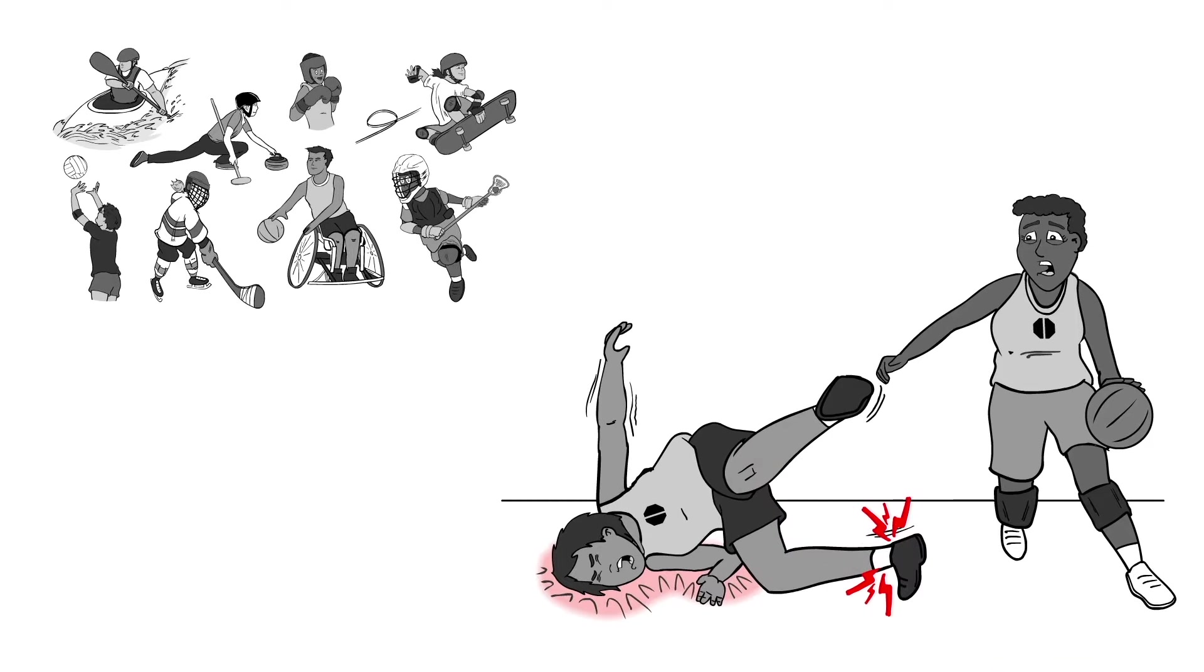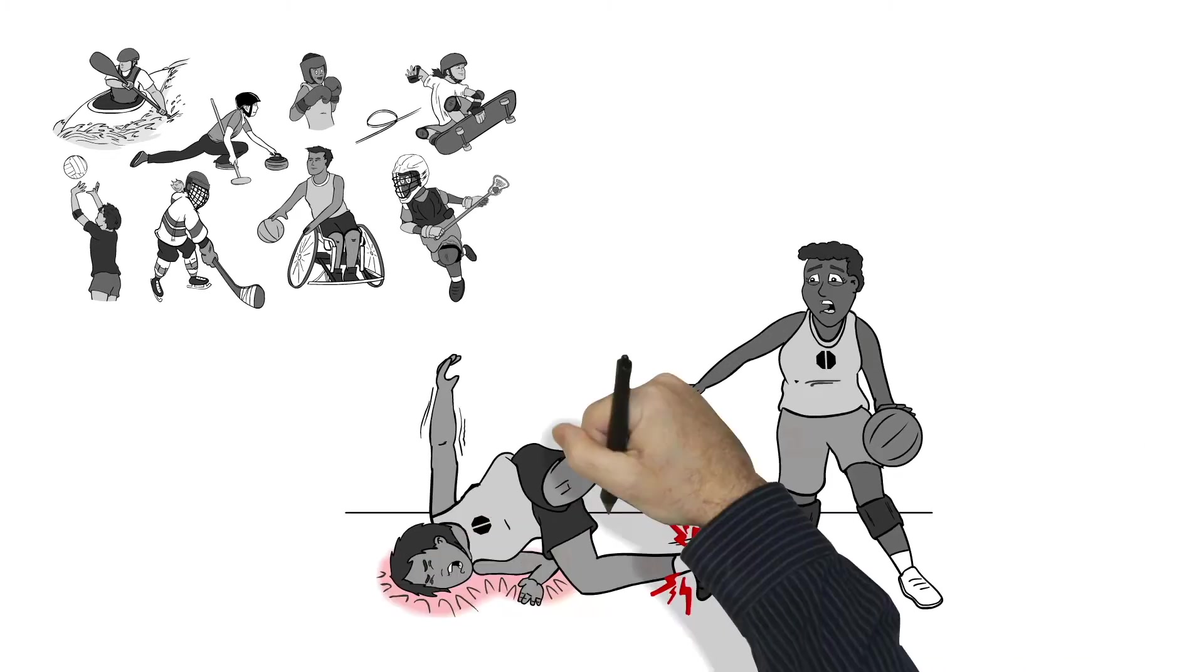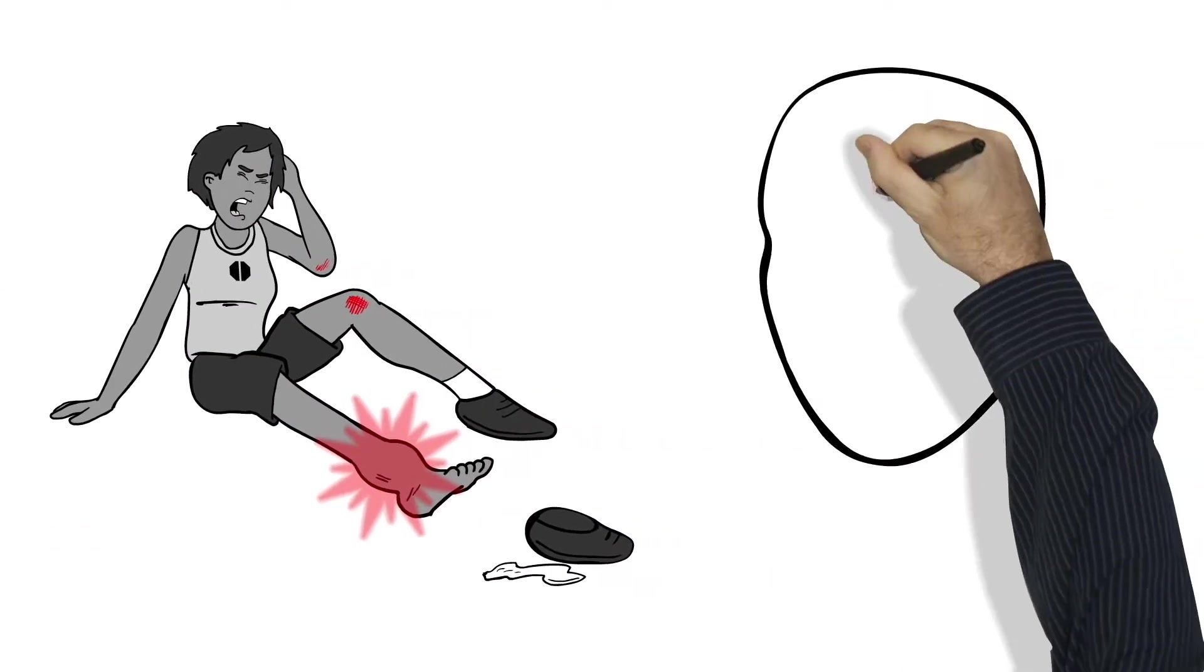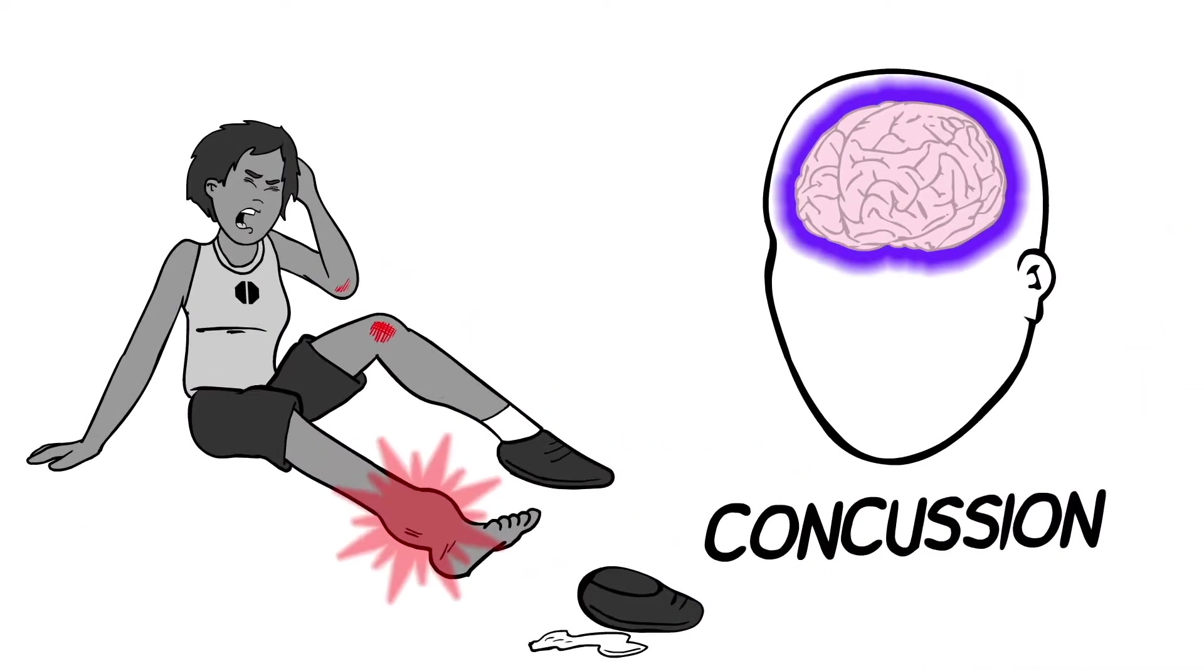A basketball player with twisted ankle falls to the ground, hitting their head. You can see some injuries, like cuts and bruises, but others, like a brain injury called a concussion, don't show on the outside.